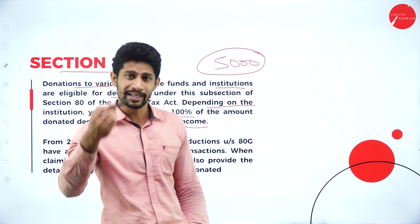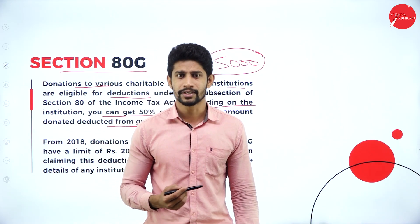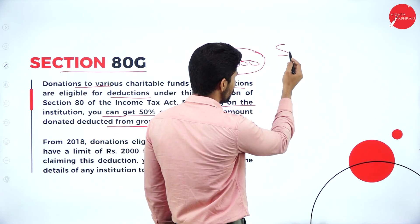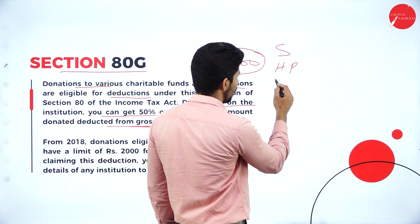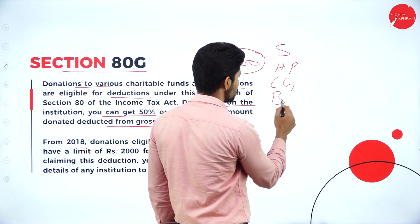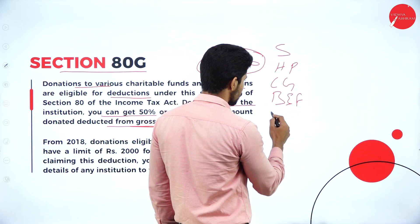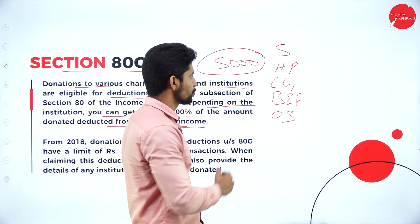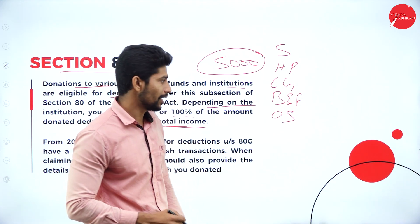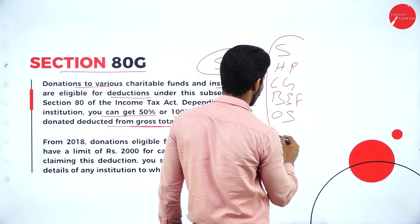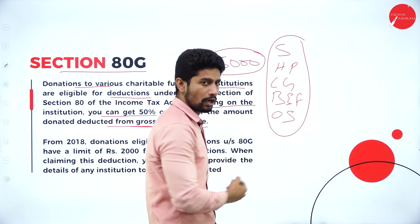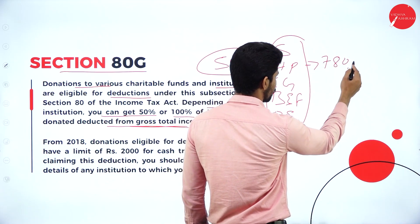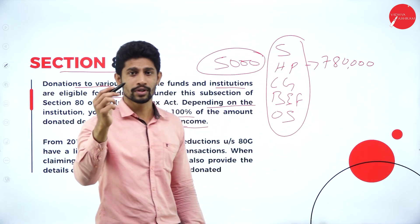What is gross total income? Gross total income is the total of salary income, house property income, capital gain income, business and profession income, and other sources income. It is the total of all five heads of income. For example, if you total all five, you might get a total of 7,80,000 — that is the gross total income.